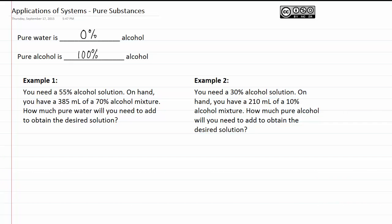In example one it says you need a 55% alcohol solution. On hand you have 385 milliliters of a 70% alcohol mixture. How much pure water will you need to add to obtain the desired solution?